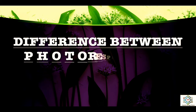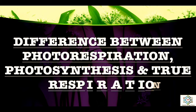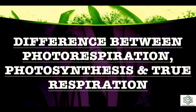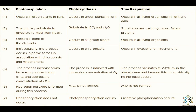Now let's see the differences between photorespiration, photosynthesis, and true respiration. Photorespiration occurs in green plants in light; photosynthesis occurs in green plants in light; true respiration occurs in all living organisms in both light and dark. The primary substrate for photorespiration is glycolate formed from RUBP; for photosynthesis it is carbon dioxide and H2O; for true respiration, substrates are carbohydrates, fats, and proteins.